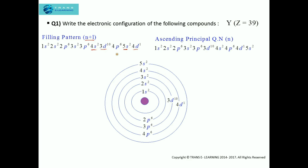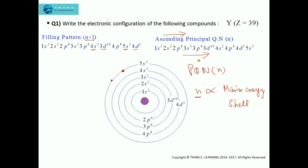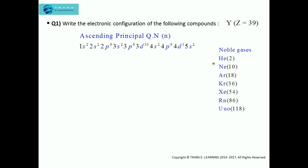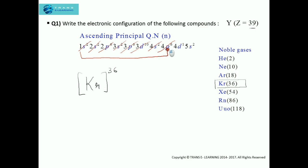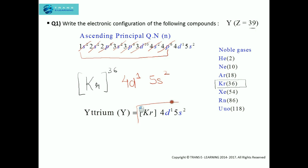When writing the final electronic configuration, we use the concept of ascending principal quantum number. To write it involving the noble gas electronic configuration: consider the nearest noble gas. Since the atomic number of yttrium is 39, we use krypton with atomic number 36. We eliminate 36 electrons from the configuration, leaving 4d1 5s2. So the electronic configuration of yttrium is [Kr] 4d1 5s2.